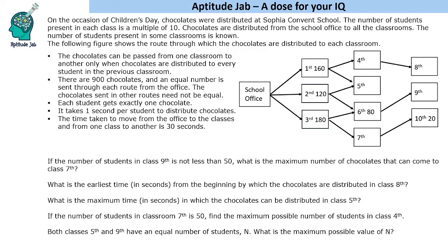On the occasion of Children's Day, chocolates were distributed at Sophia Convent School, and the number of students present in each class is a multiple of 10. The number of students present in some classrooms is given to us — for example, 1st, 2nd, 3rd, 6th, and 10th.